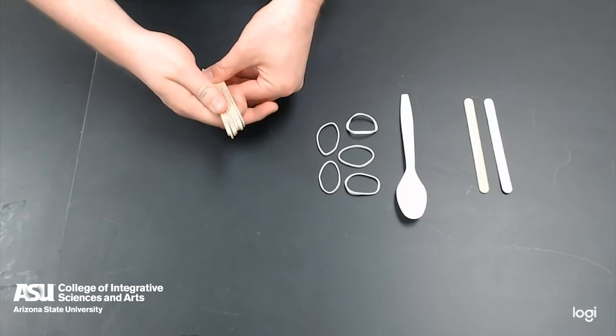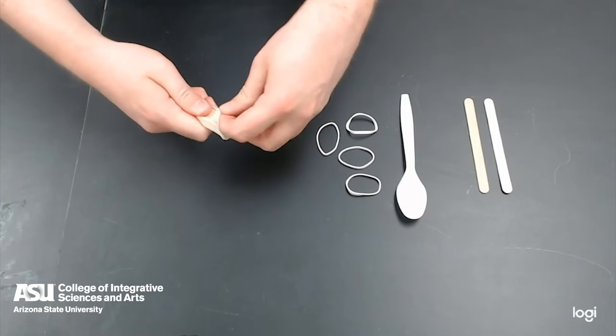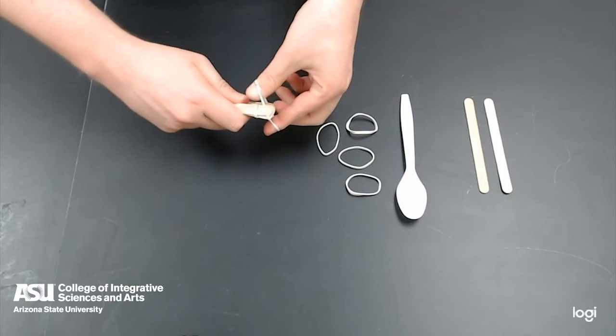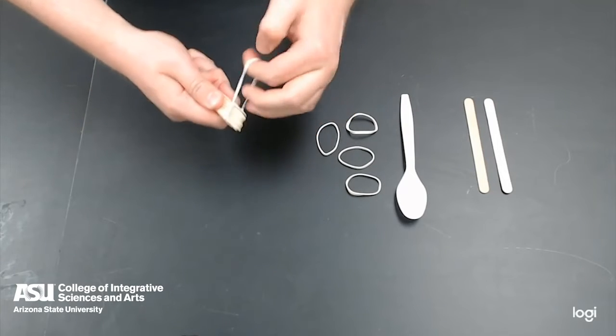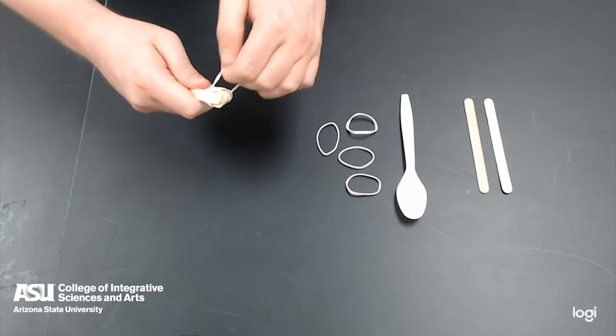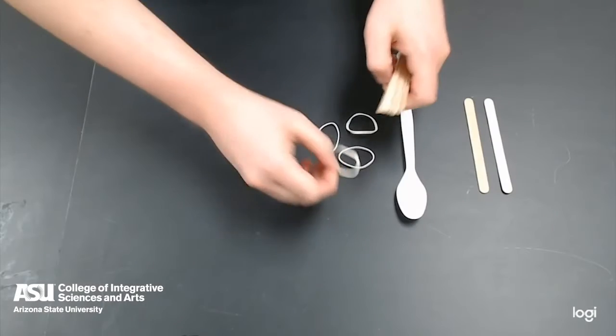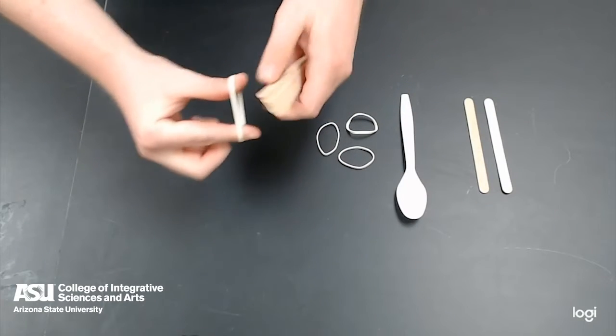Once you have them all together, take a rubber band and put it around each end of the stack of popsicle sticks. You'll need to do this a couple times. Make sure that the popsicle sticks stay nice and together. Repeat for the other side.